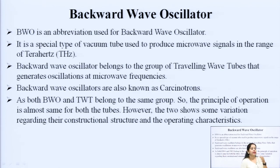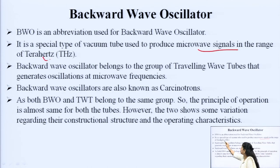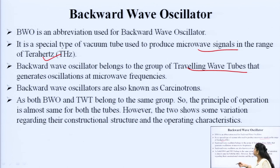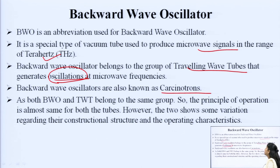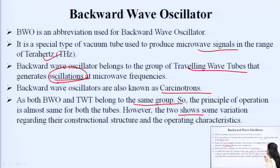Now comes the backward wave oscillator. The backward wave oscillator, abbreviated as BWO, is a special type of vacuum tube used to produce microwave signals in the range of terahertz. The BWO belongs to the group of travelling wave tubes and generates oscillations at microwave frequency. TWT is an amplifier but BWO generates oscillations. Backward wave oscillators are also known as carcinotrons, as both BWO and TWT belong to the same group, so the principle of operation remains the same with variations in construction structure and operating method.